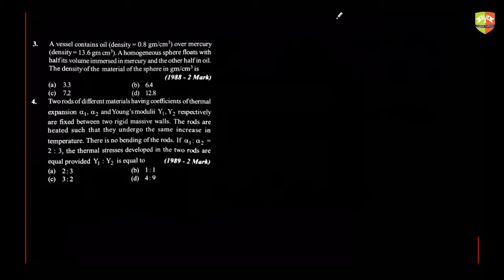Third one, C, Amok is getting. Almost everyone, four people have got C as the option. A vessel contains oil over mercury. A homogeneous sphere floats with half of its volume immersed in mercury and half in oil. The density of material of the sphere is what? So just you need to find out the weight of the fluid that is displaced and equate that to the weight of the sphere.